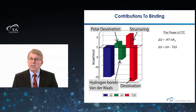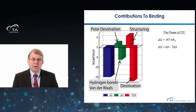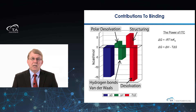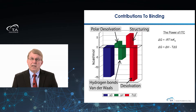This graph is one that has been seen many times when comparing different binding reactions. It is a bar graph that looks at Gibbs free energy shown in blue, enthalpy shown in green, and the red bars represent the entropy contribution. You see that many of those driving forces contribute to things like polar desolvation, structure changes, hydrogen bonds, and van der Waals forces. All of that can be compared in one graph and gives you a nice thermodynamic signature for the binding reaction taking place.